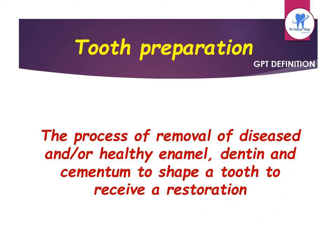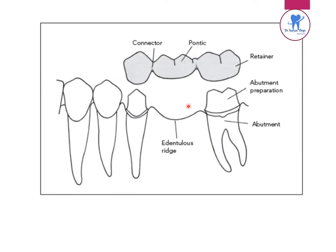These are the various components of a fixed partial denture: the connector, the pontic, and the retainer. Here is the edentulous ridge, and these are the abutments. This abutment is prepared, so this is abutment preparation.